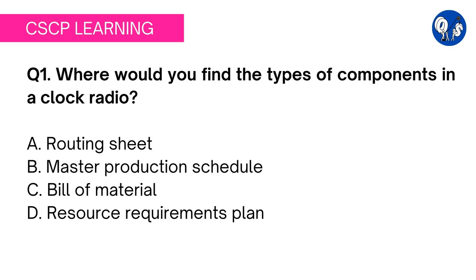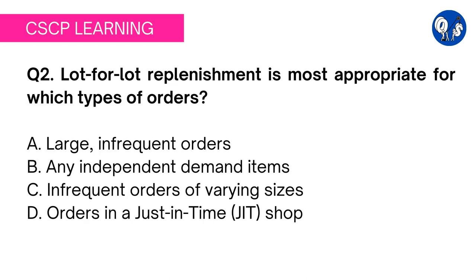RRP deals with the requirement of productive resources including machines, equipment, workers, and funds based on the production plan. Please don't mix it with bill of material. Bill of material deals with the components or ingredients or parts required to build a product, whereas resource requirement planning deals with resources like machines, equipment, workers, and funds. Option C is the right answer.